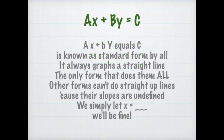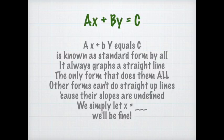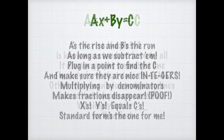Ax plus By equals C is known as standard form by all. It always graphs a straight line, the only form that does them all. Other forms can't do straight up lines, cause their slopes are undefined. But we simply let x equals, we'll be fine.